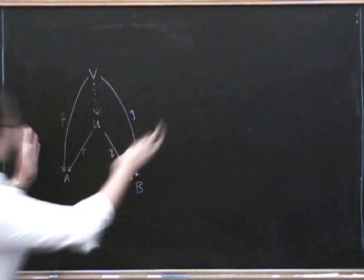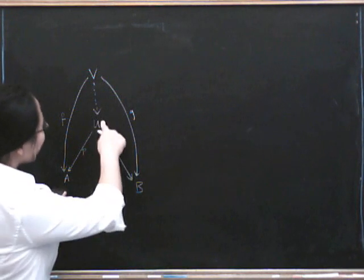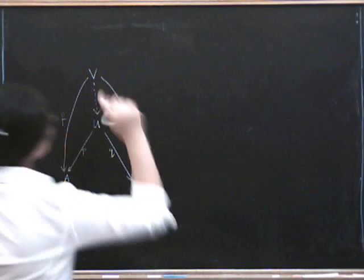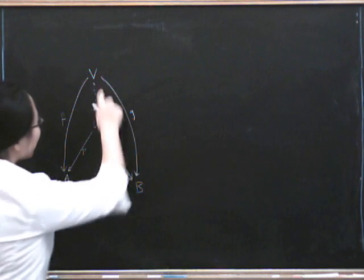We're going to turn around this definition of a product. Remember that a product of A and B is an object equipped with projection maps like this, such that, here's the universal property, such that given any object equipped with morphisms like that, there's a unique factorization.